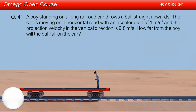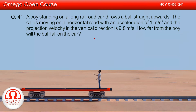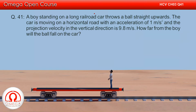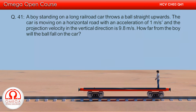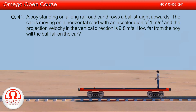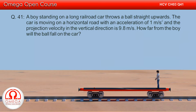A boy standing on a long railroad car throws a ball straight upwards. The car is moving on a horizontal road with an acceleration of 1 meter per second squared, and the projection velocity in the vertical direction is 9.8 meters per second. How far from the boy will the ball fall on the car?